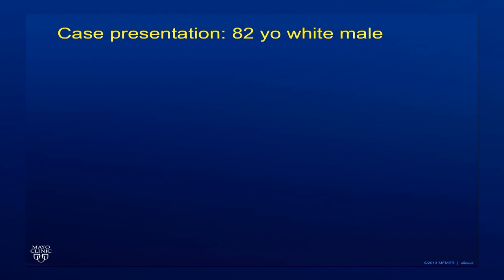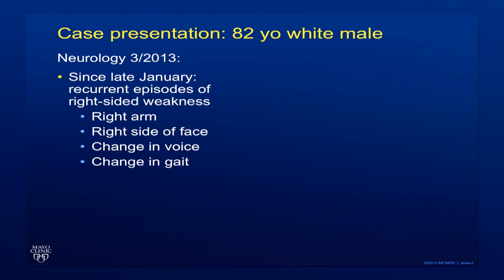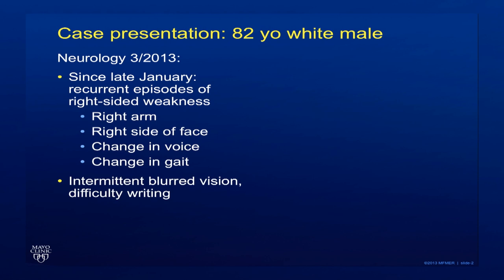He is an 82-year-old white male. He initially presented to the neurology department complaining of several months of recurrent episodes of right-sided weakness involving his right arm, the right side of his face, changes in his voice and his gait, and intermittent blurring of his vision.